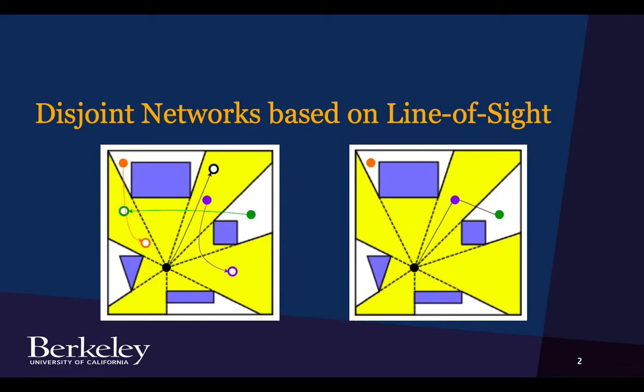So this then creates communication networks, like shown on the right, where black can communicate with purple, and then also can communicate with green because purple can see green, but it can't communicate with orange because it can't see orange, nor can any of the other agents that it's connected to.